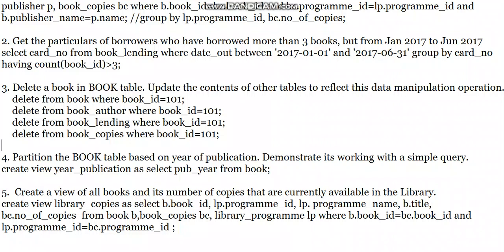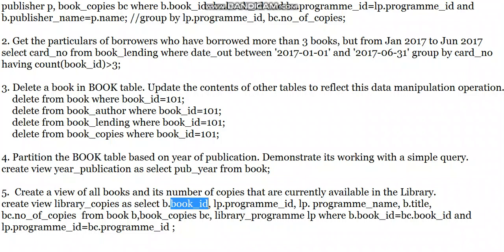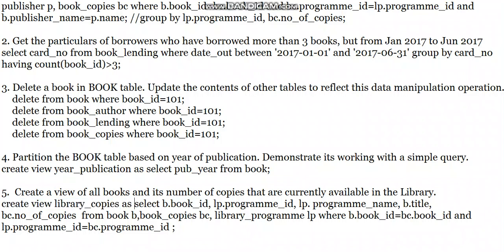The fifth query asks us to create a view of all books and the number of copies currently available in the library. The number of copies is in the book_copies table, the book ID is in the book table, and available library departments are in the library_program table. Since multiple tables share the same attributes, we are using aliasing.